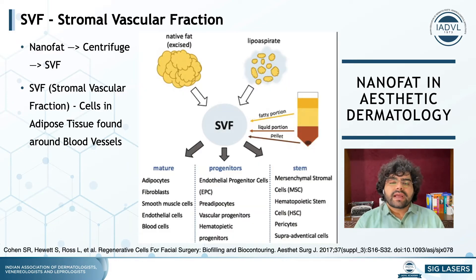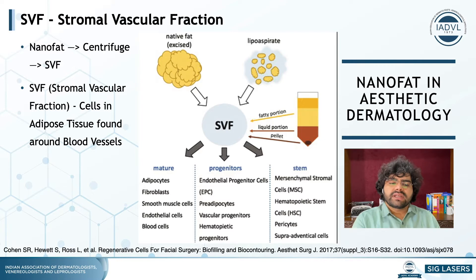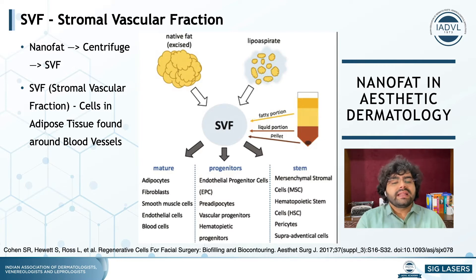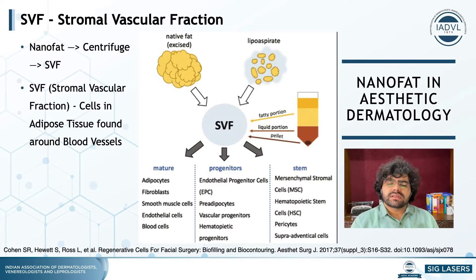All the regenerative potential attributed to nanofat today is because of the stromal vascular fraction. The stromal vascular fraction contains three major types of cells: mature cells present in adipose tissue — adipocytes, fibroblasts, smooth muscle cells, endothelial cells, blood cells — progenitor cells which give rise to these mature cells, and most importantly stem cells: mesenchymal stromal cells, hematopoietic stem cells.